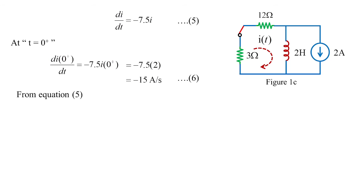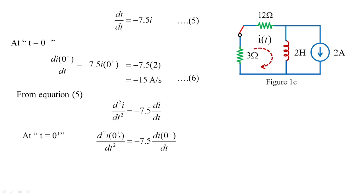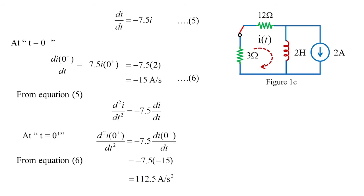From equation 5, differentiating gives d²i/dt² = −7.5 · di/dt. At t = 0 plus: d²i/dt²|₀₊ = −7.5 × (di/dt|₀₊) = −7.5 × (−15) = 112.5 amperes per second squared. This is how the behavior of the inductor under switching conditions is understood, and how the acceleration and rate of change of current are determined from the switching action.